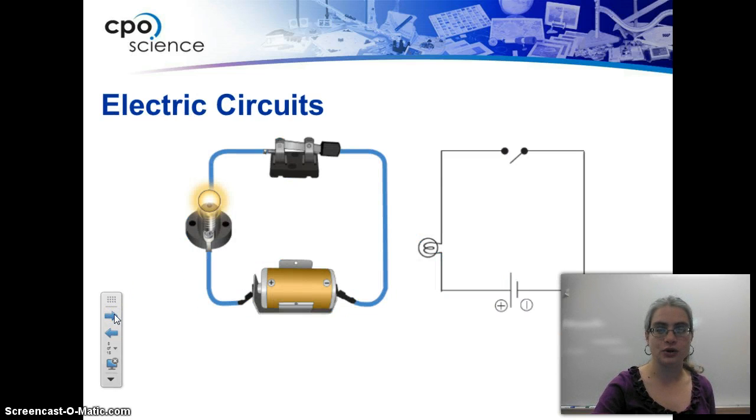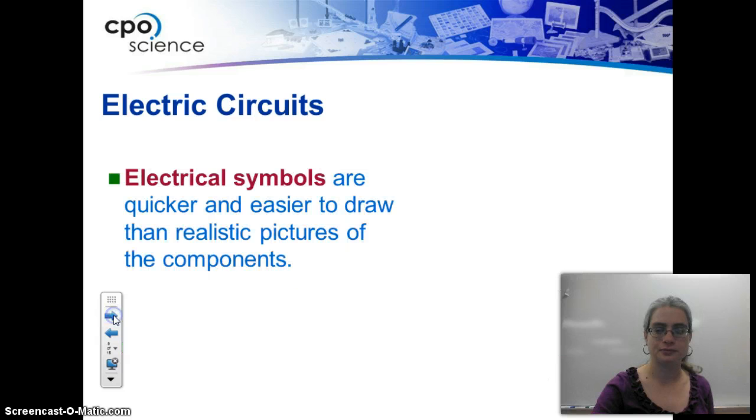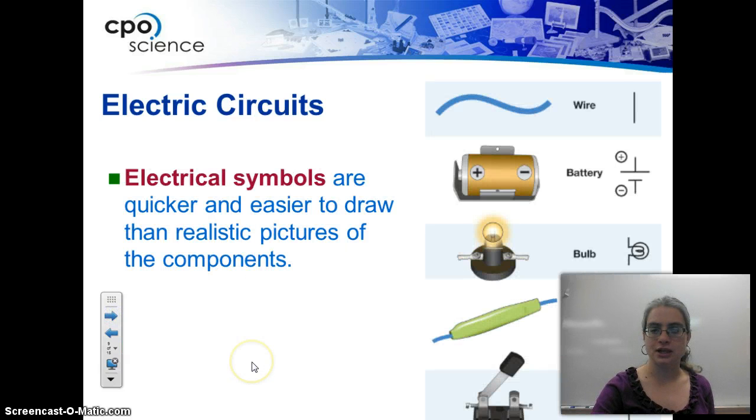So here's the basic idea of a circuit, and you can see the circuit diagram. This is a much better symbol of a bulb than what I drew yesterday, but you'll see the symbol of a battery, an open switch, and then the wires connecting it.